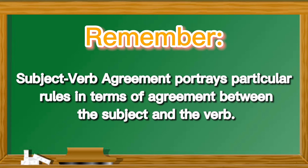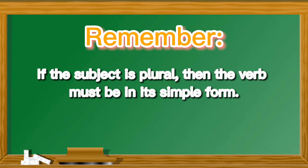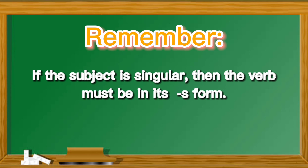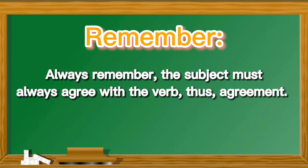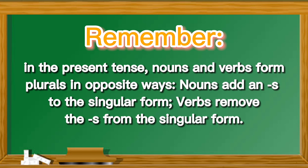Remember, subject-verb agreement portrays particular rules in terms of agreement between the subject and the verb. The subject and verb of the sentence must agree in number. If the subject is plural, then the verb must be in its simple form. If the subject is singular, then the verb must be in its S form. Always remember, the subject must always agree with the verb — that's agreement. In the present tense, nouns and verbs form plurals in opposite ways: nouns add an S to the singular form, while verbs remove the S from the singular form.